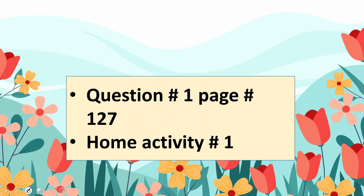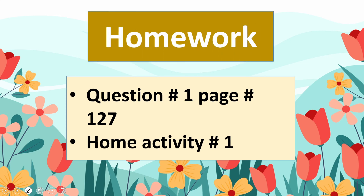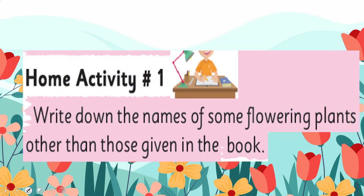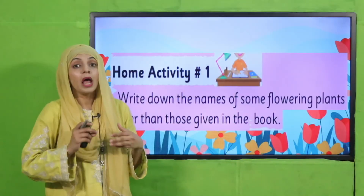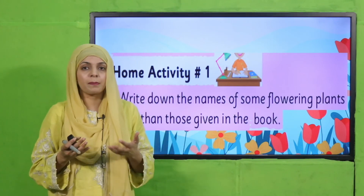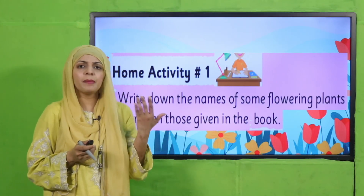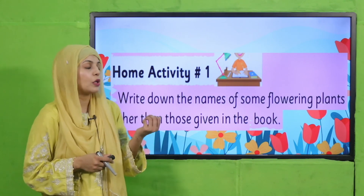Now let's move forward towards the homework. You will do question number 1 and question number 127, and you will also do home activity number 1. Home activity number 1 says: write down the names of some flowering plants other than those given in the book. There are so many flowering plants — rose, jasmine, marigold are already given. Search for others and write them down in your notebook.